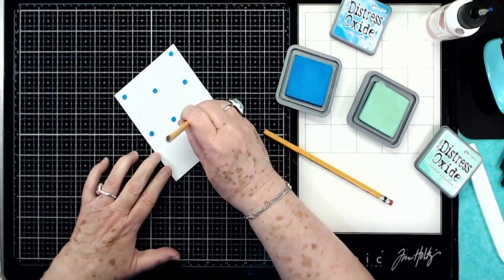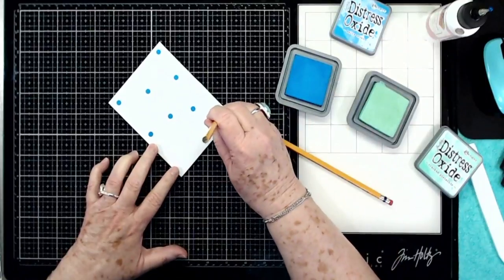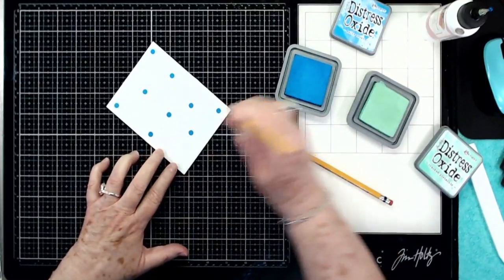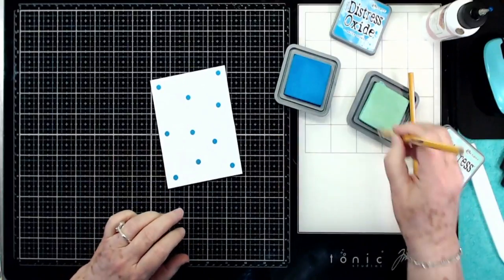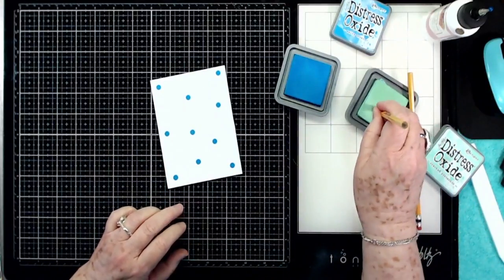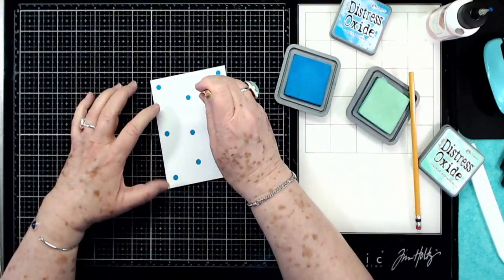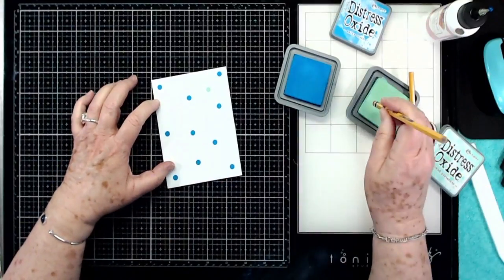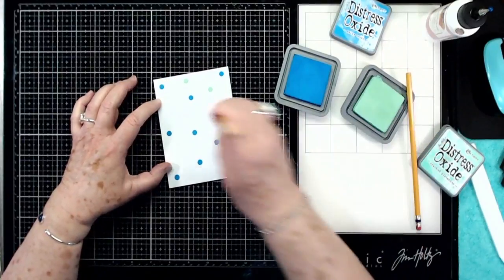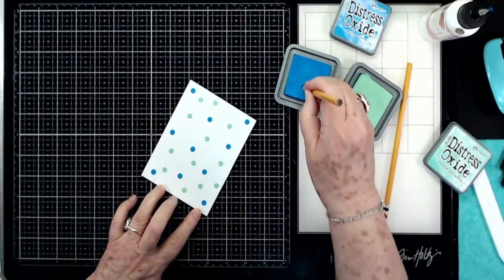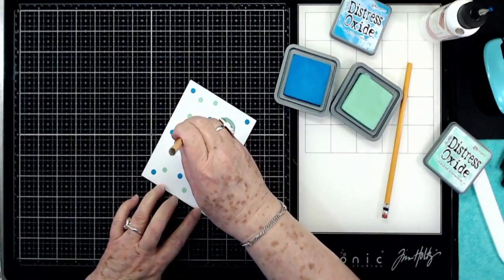Another way to stamp without having to pull out stamps. All right, we're going to go in with our green - this is Cracked Pistachio. I'm going to pull some of the blue back in here.